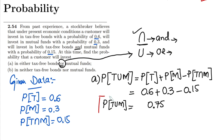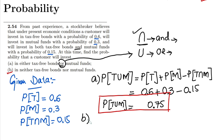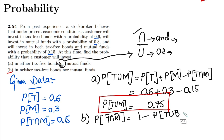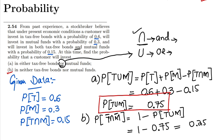For part B, we need to find the probability that a customer will invest in neither tax-free bonds nor mutual funds. This is the probability of T-complement intersection M-complement, which equals 1 minus the probability of T union M. Since P(T union M) is 0.75, the answer is 1 minus 0.75, which equals 0.25.